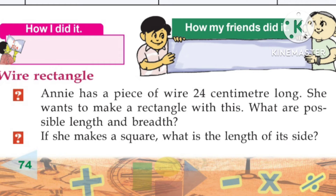Wire rectangle. Annie has a piece of wire 24 cm long. She wants to make a rectangle with it. What are the possible length and breadth combinations? We have 24 cm of wire as the perimeter, so we find the length and breadth accordingly.